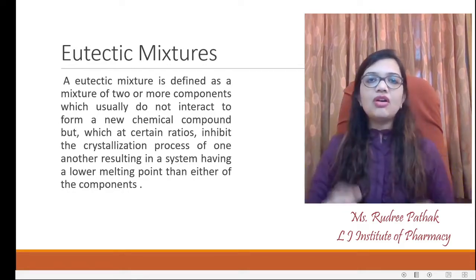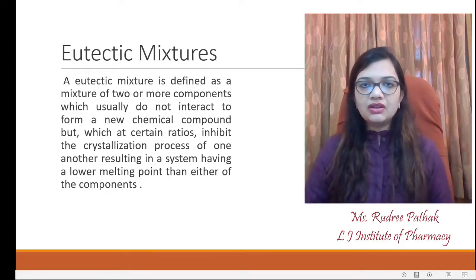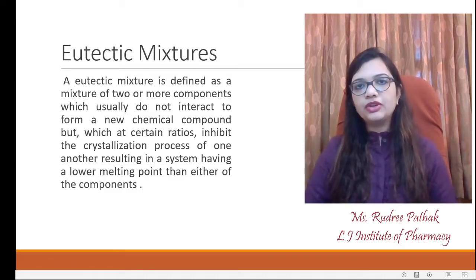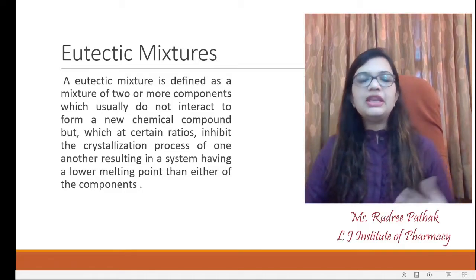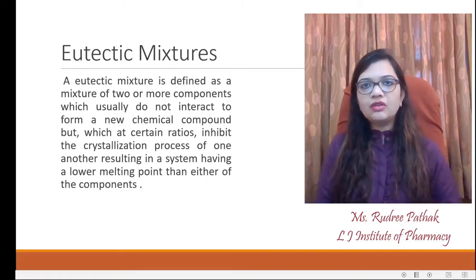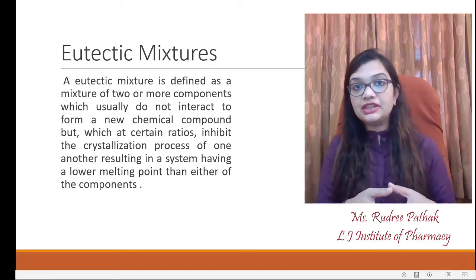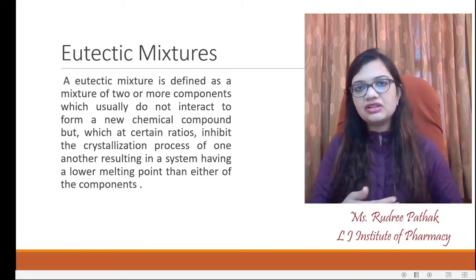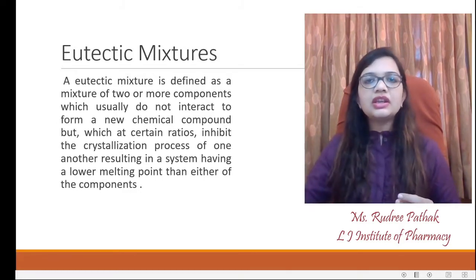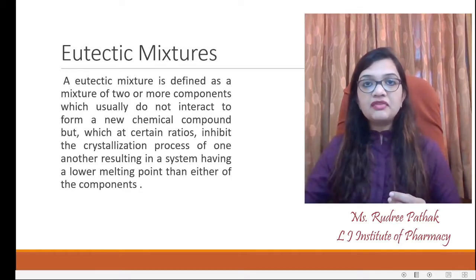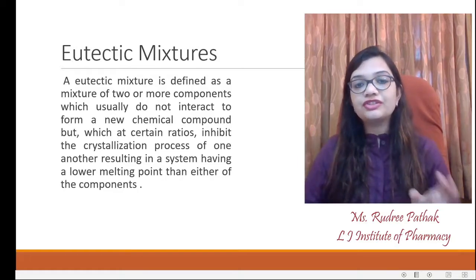A eutectic mixture is defined as a mixture of two or more components which do not interact or react chemically, but at a certain ratio or at a particular temperature, they behave as a liquid. Imagine we have two solids which come in close proximity to each other, and because of some changes or alterations in their physical properties, they result in a third compound which behaves like a liquid and not a mixture of solids.